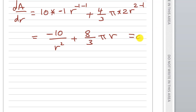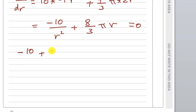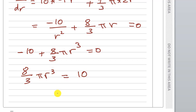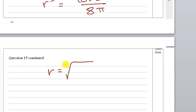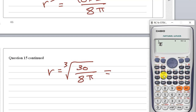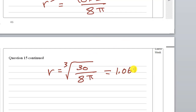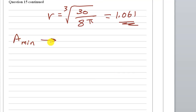Setting dA/dr equal to zero: minus10 plus (8/3)πr³ equals zero, so (8/3)πr³ equals 10, so r³ equals 30 divided by 8π. Therefore r equals the cube root of 30 divided by 8π, which gives r approximately equal to 1.061.